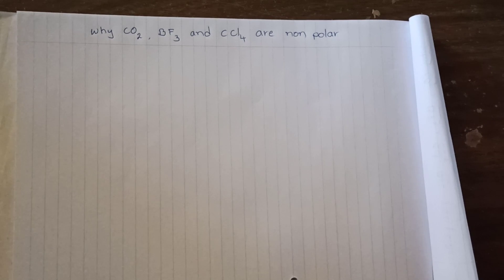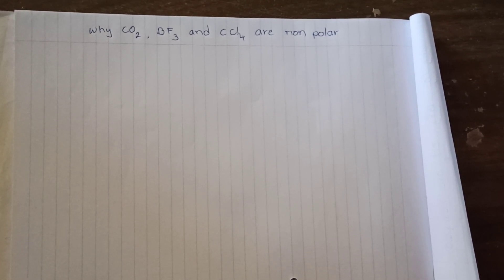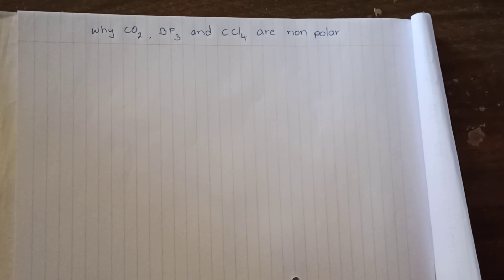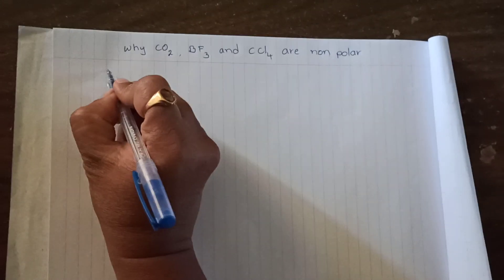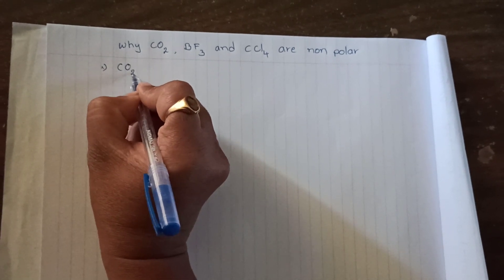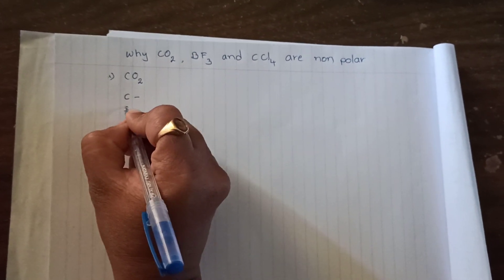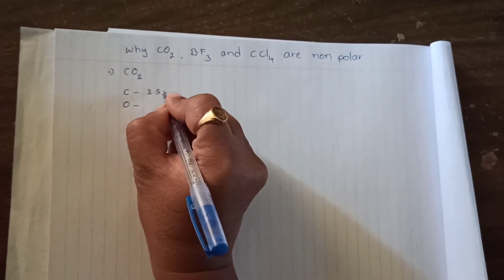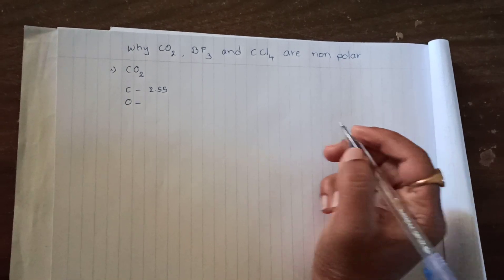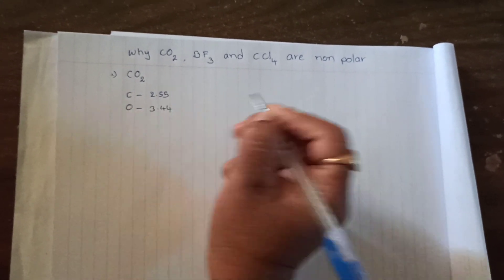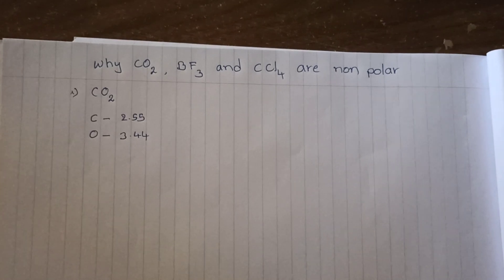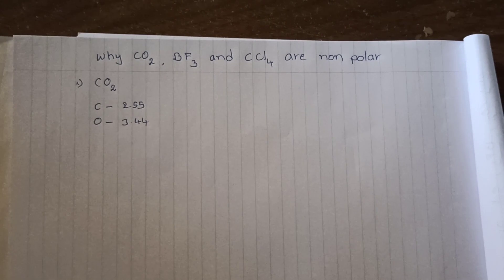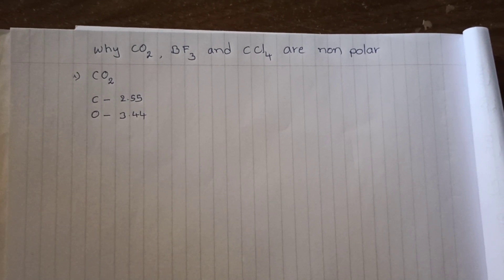The basic rule to say whether a molecule is polar or non-polar is to look at the electronegativity difference between the atoms. For example, if I take carbon dioxide, there are two atoms — carbon and oxygen. Carbon's electronegativity is 2.55 and oxygen's electronegativity is 3.44. There is a large electronegativity difference, so we would expect carbon dioxide to behave as a polar molecule.